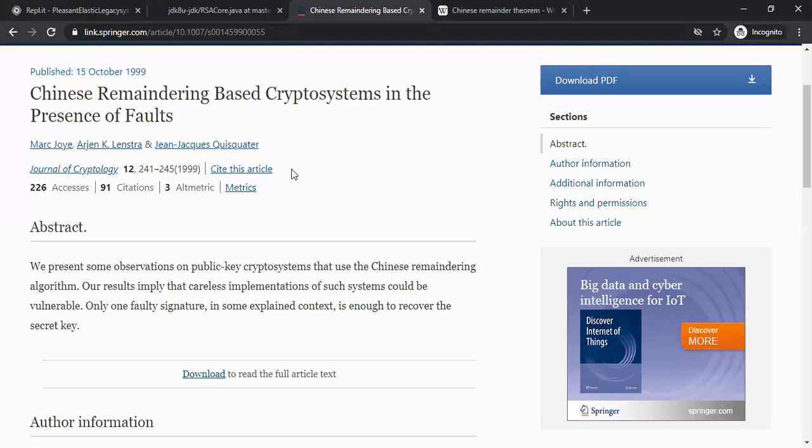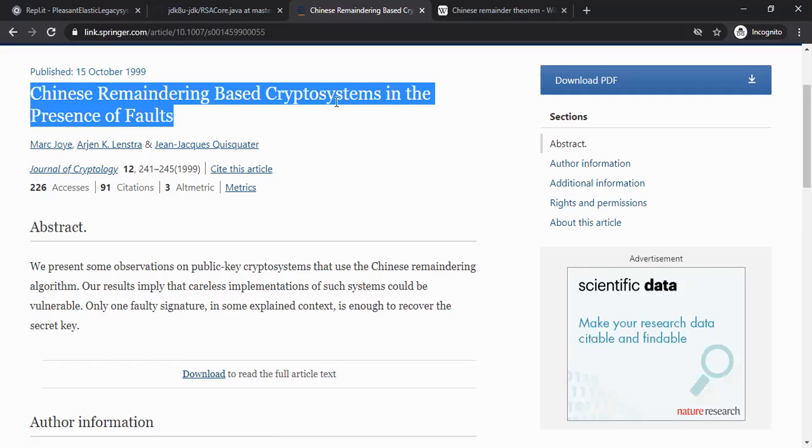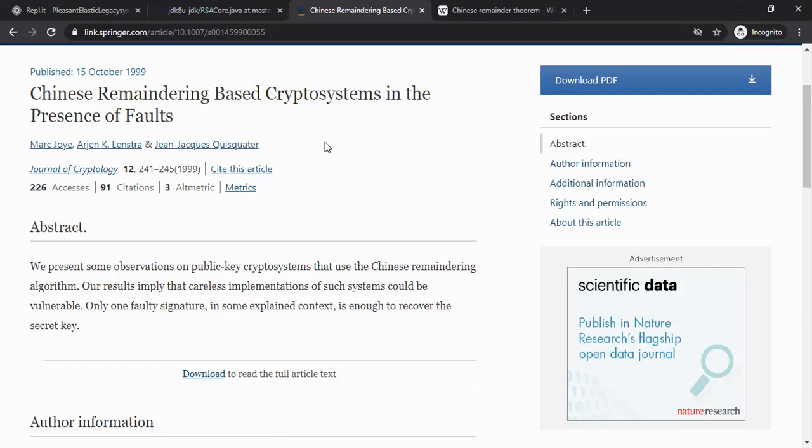So I was reading this article which was published back in late 90s. This particular article talks about Chinese Remainder based cryptosystems in the presence of faults. I am going to make use of the idea but tune it to a different context. The paper's context is mostly about digital signature, but I'm going to do a chosen ciphertext based attack to demonstrate the problem.